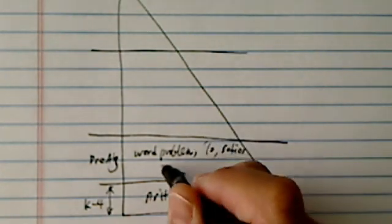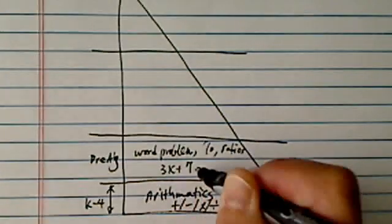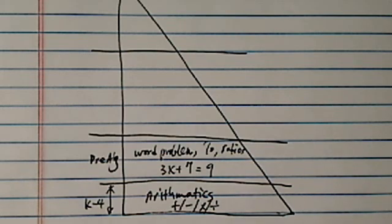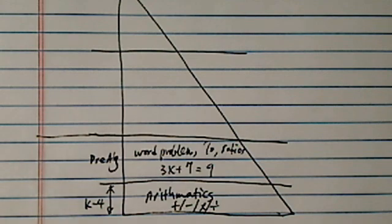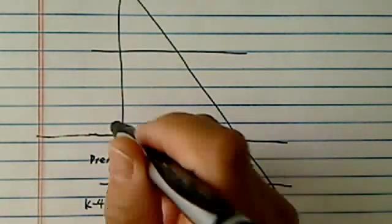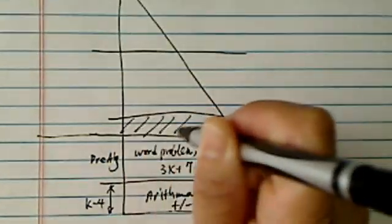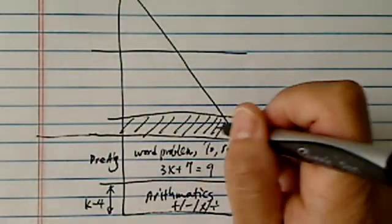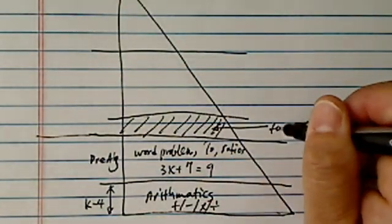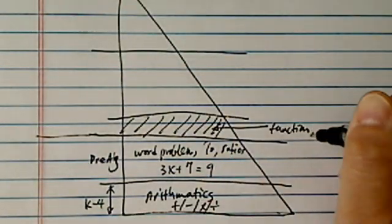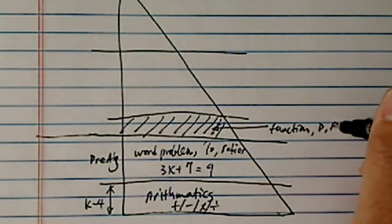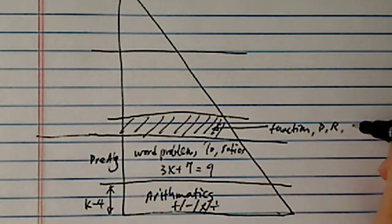And then we have this thing called solving equations. So up to 9th grade or so, we're doing a lot of groundwork, building up the foundation. Next comes this chunk — that's called transitional material. This is where the function, or the concept of function, domain, range, and inverse function is introduced.